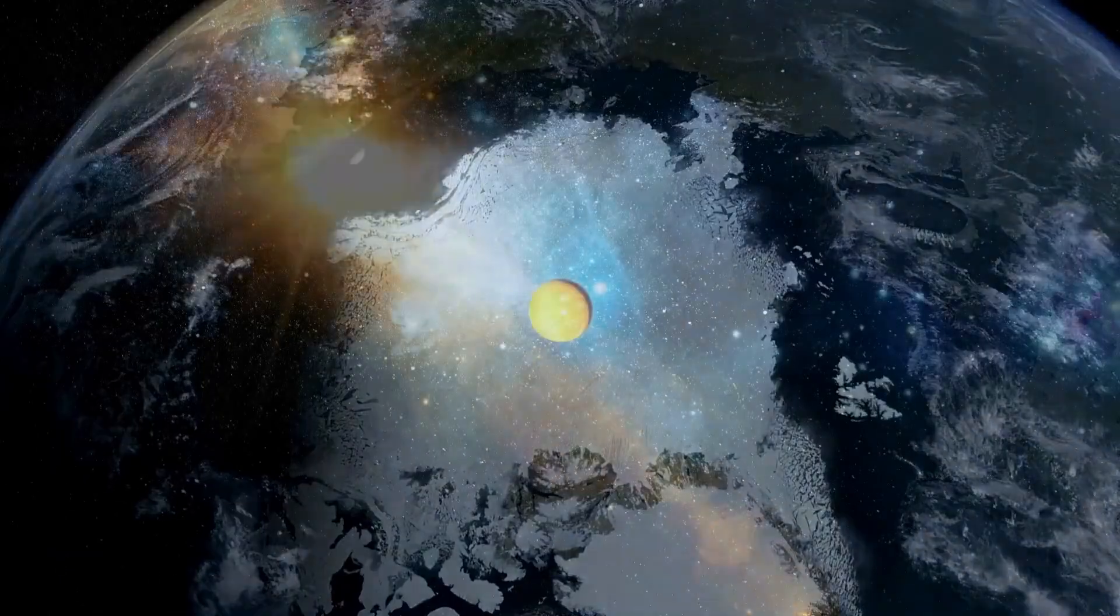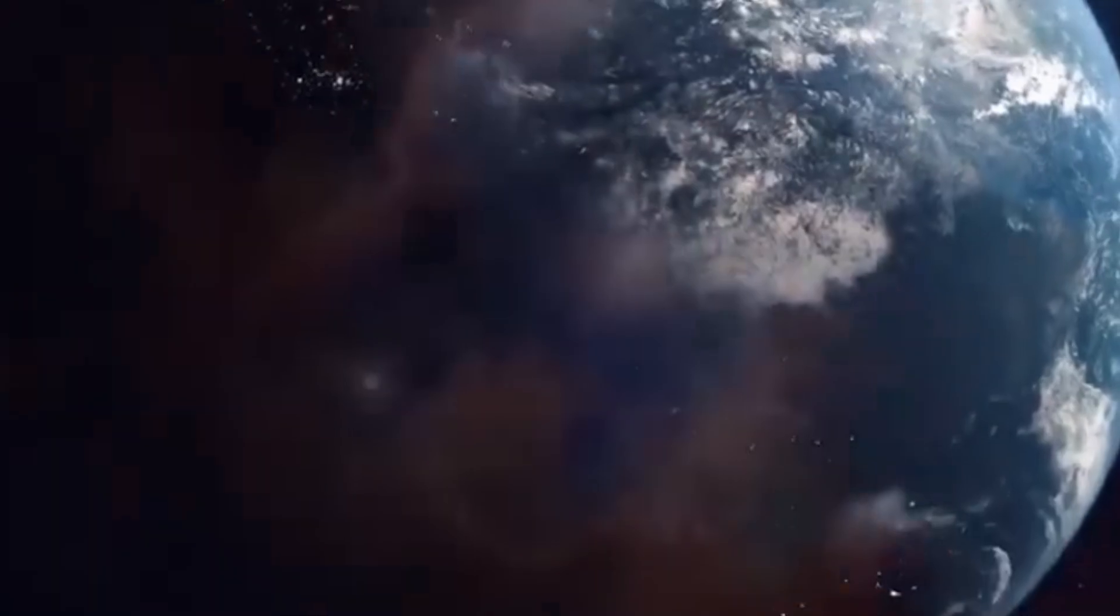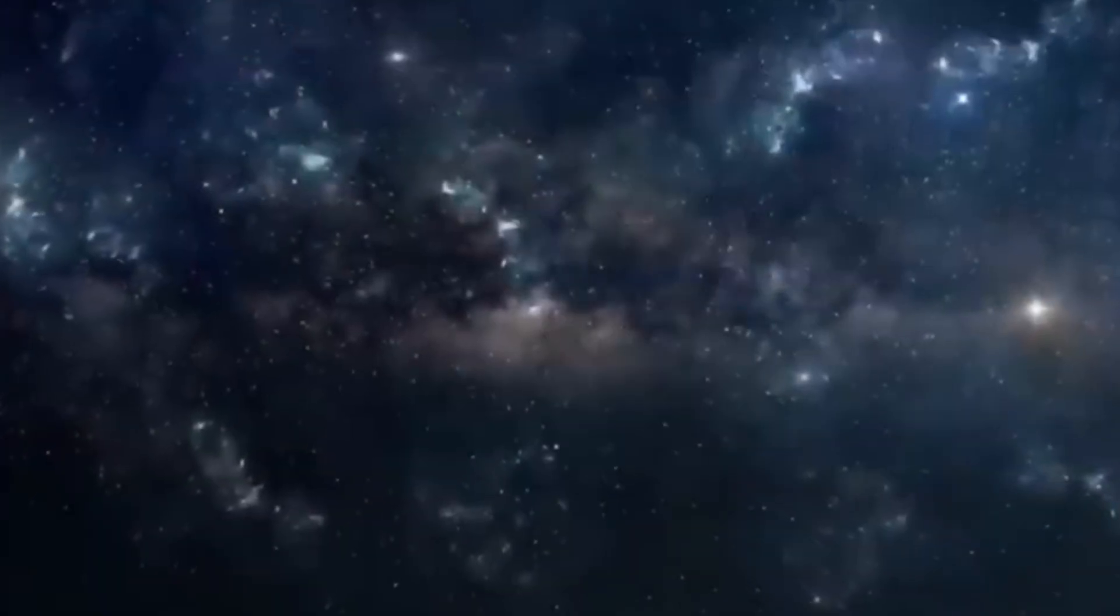Twenty years ago, planets beyond our solar system were unknown. Since then, over 4,000 exoplanets have been discovered orbiting other stars. NASA estimates that there may be trillions of exoplanets in the universe.